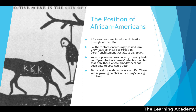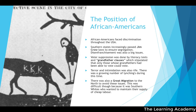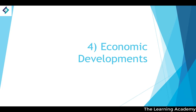Beyond disenfranchisement, there was also terror and intimidation, with a growing number of lynchings carried out by groups like the KKK. There was also a Great Migration — a movement of African Americans northward where life was somewhat easier. This created a dilemma for southern states, which wanted to suppress African American political participation but also needed to retain their supply of cheap, formerly enslaved labor.